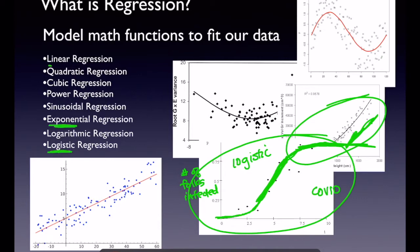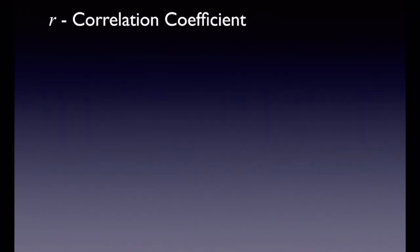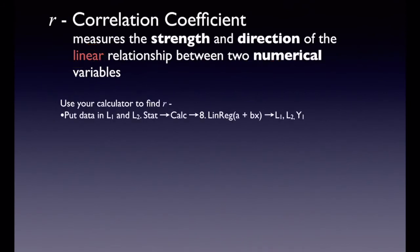Exponential is pretty common; we do a lot of linear. But for this particular class, we're really focusing on linear. You choose the best fitting model and then use that model to predict. There were four interpretations you need to know for Chapter 12. The first one is the correlation coefficient r, which tells you the strength and direction for a linear relationship — only linear — and it has to be between two numerical variables. To find it in your calculator, do STAT → CALC → 8, L1, L2, Y1. Make sure your diagnostics are on so that r and r² pop up.